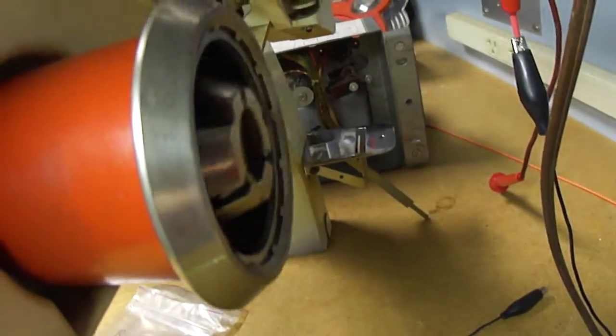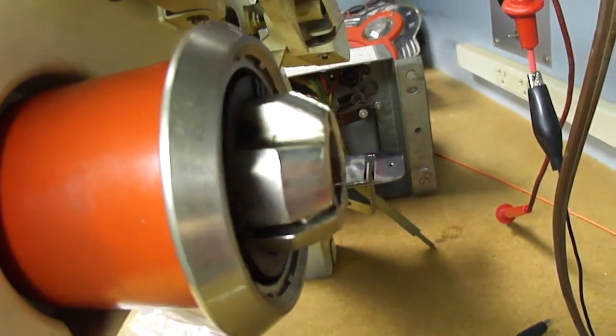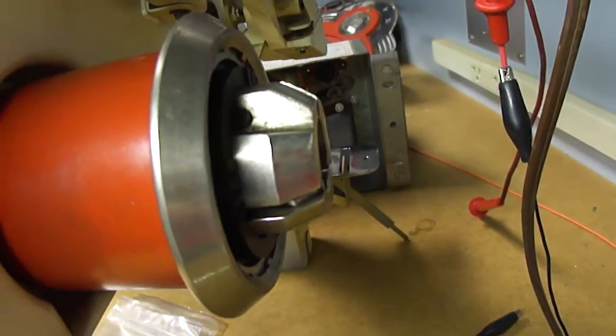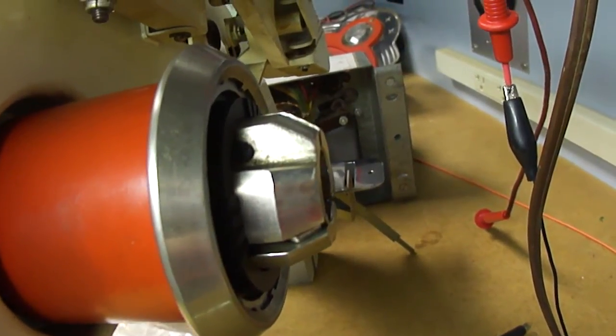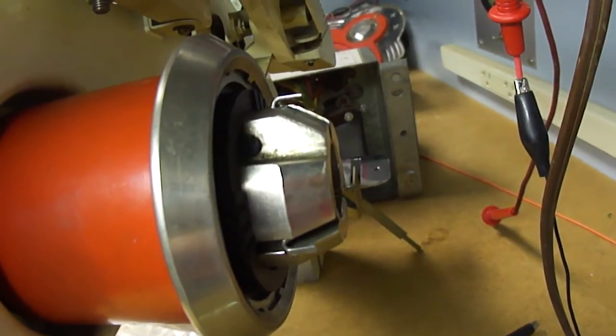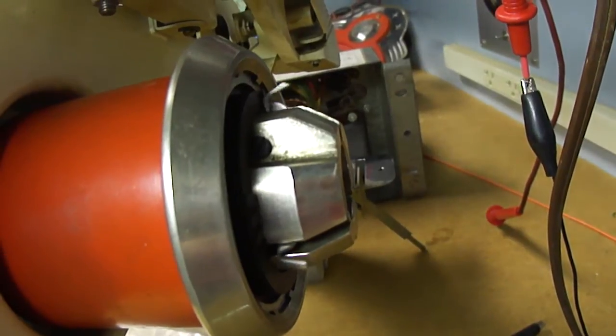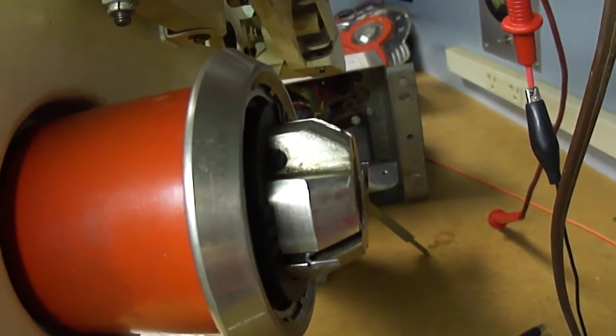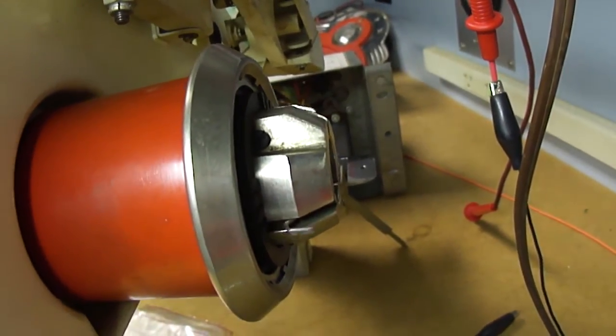And you'll notice what happens is, first the turntable pops out to go into the record, and then the second part of it you can see here, the clamp fingers go down to hold the record onto the turntable.